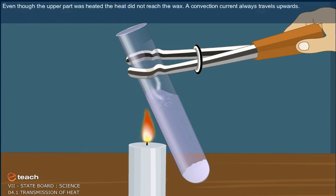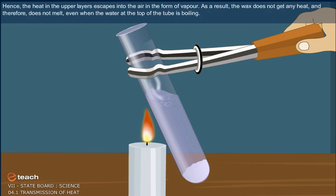Observe the piece of wax at the bottom of the tube. Even though the upper part was heated, the heat did not reach the wax. A convection current always travels upwards. Hence, the heat in the upper layers escapes into the air in the form of vapour. As a result, the wax does not get any heat and therefore does not melt, even when the water at the top of the tube is boiling.